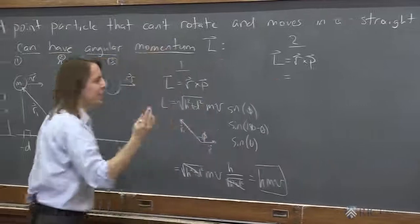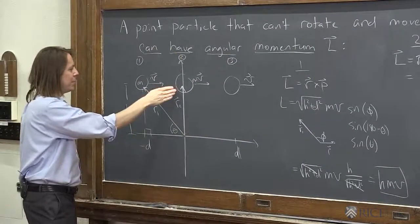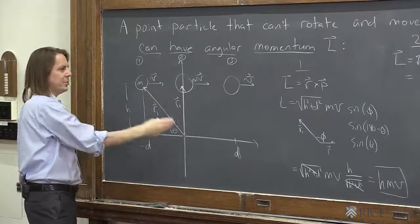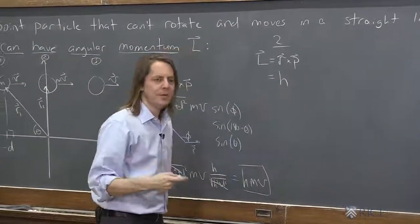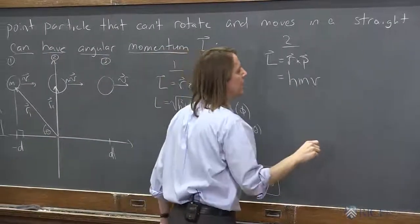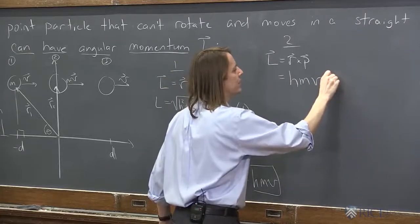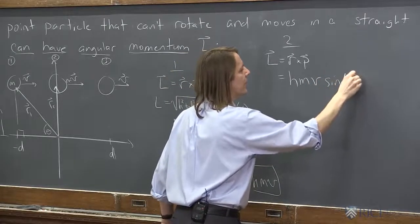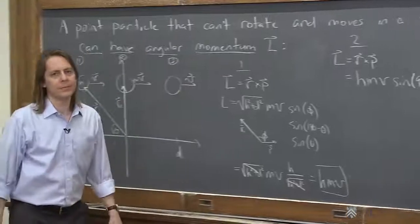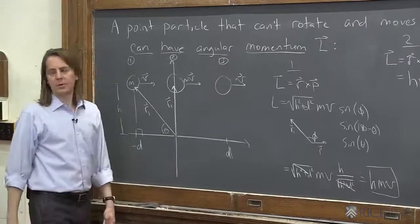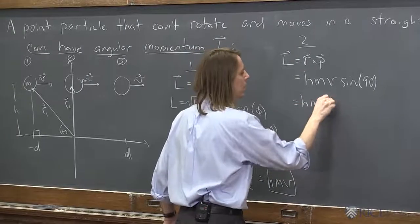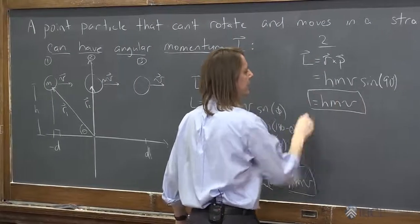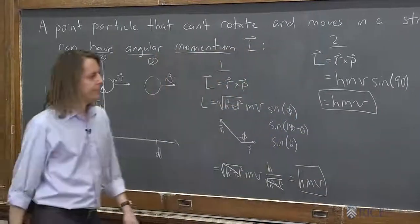So, I got ahead of myself. I'm sorry. So the magnitude of r is h. There's no angle here. It's just straight up. h. The magnitude of p is mv. The sine of the angle between them is the sine of 90 degrees. You can tell just by looking at it. The sine of 90 degrees is 1. Right? So this one is just hmv. Interesting. Same thing. At position two.